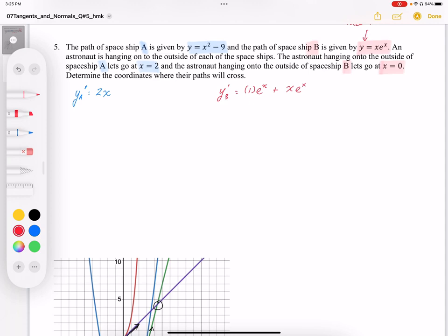And then using these two functions, we can calculate the y prime of A when it lets go at x equals 2. So the slope is 4. And for spaceship B, we're going to find the y prime at 0, and that's going to end up being e to the 0 plus 0 or just 1.